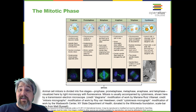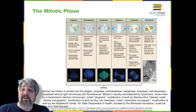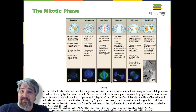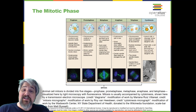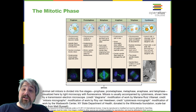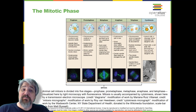During pro-metaphase, many processes that were begun in prophase continue to advance and culminate in the formation of a connection between the chromosomes and the cytoskeleton. The remnants of the nuclear envelope disappear. The mitotic spindle continues to develop as more microtubules assemble and stretch across the length of the former nuclear area. Chromosomes become more condensed and visually discrete. Each sister chromatid attaches to spindle microtubules at the centromere via a protein complex called the kinetochore.